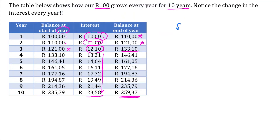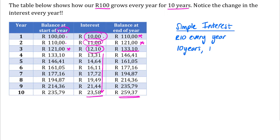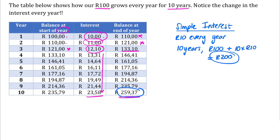Compare that to simple interest: we would have only earned R10 every year, so after 10 years we'd have R100 plus 10 × R10, giving exactly R200. Compare this to compound interest's R259 — that's an extra R59 in just 10 years. If we started with R100,000 we'd earn an extra R59,000 in interest. And remember, in the scale of compound interest, 10 years is not very long.